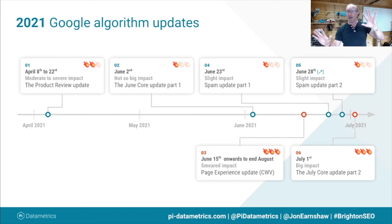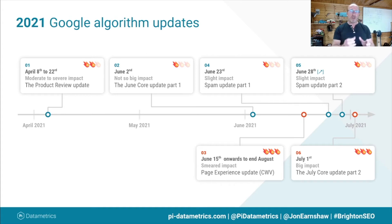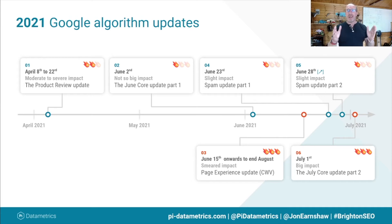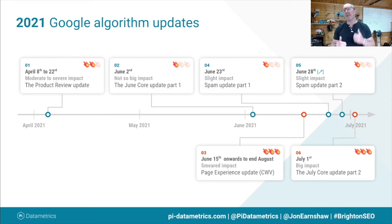In between those two updates was the June 15th core web vitals or page experience update. I've given this three meteorites — this is potentially hazardous and potentially disaster region for some — because it's been smeared. There was a little bit of impact, but the real risk is that if your page performance scores are poor (red) or even need improvement (amber) in comparison with competitors, by the time the algo finishes its smeared rollout at end of August or early September, you're going to see that attritional day-on-day decline. Google gave us 12 months notice and set those targets for loading, interactivity, and visual stability.